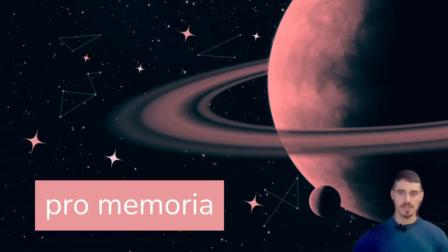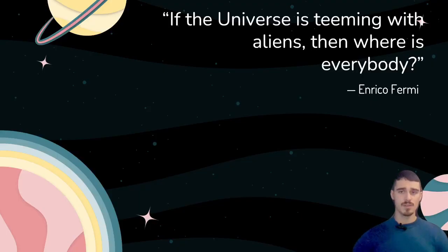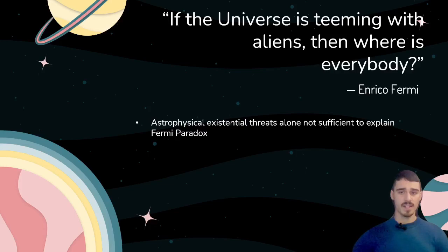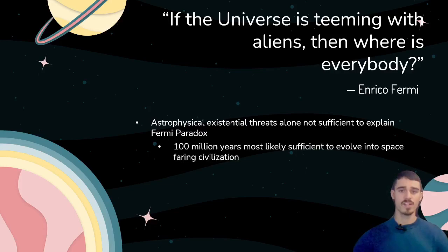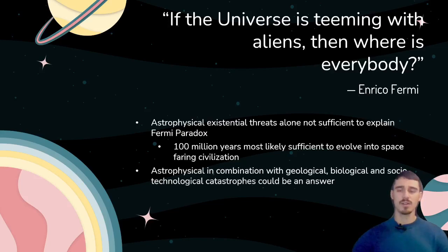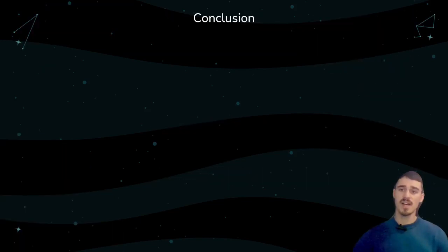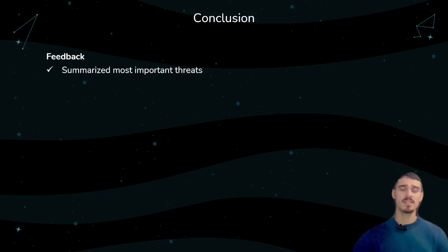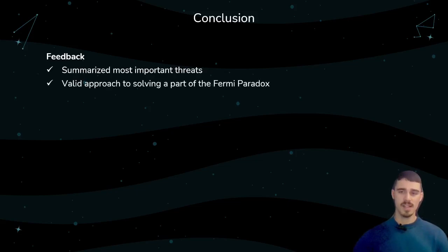Let us return to the beginning of the presentation. Was this analysis able to shed some light on the Fermi Paradox? We have learned that astrophysical threats alone are not sufficient to explain the mysterious paradox, due to the fact that 100 million years is most likely more than enough for a species to evolve from a microorganism to a spacefaring civilization. Perhaps if we take the other three civilization-ending catastrophes into our calculations, we could get one of the many possible solutions to the Fermi Paradox — hopefully turning it into the Fermi theory.